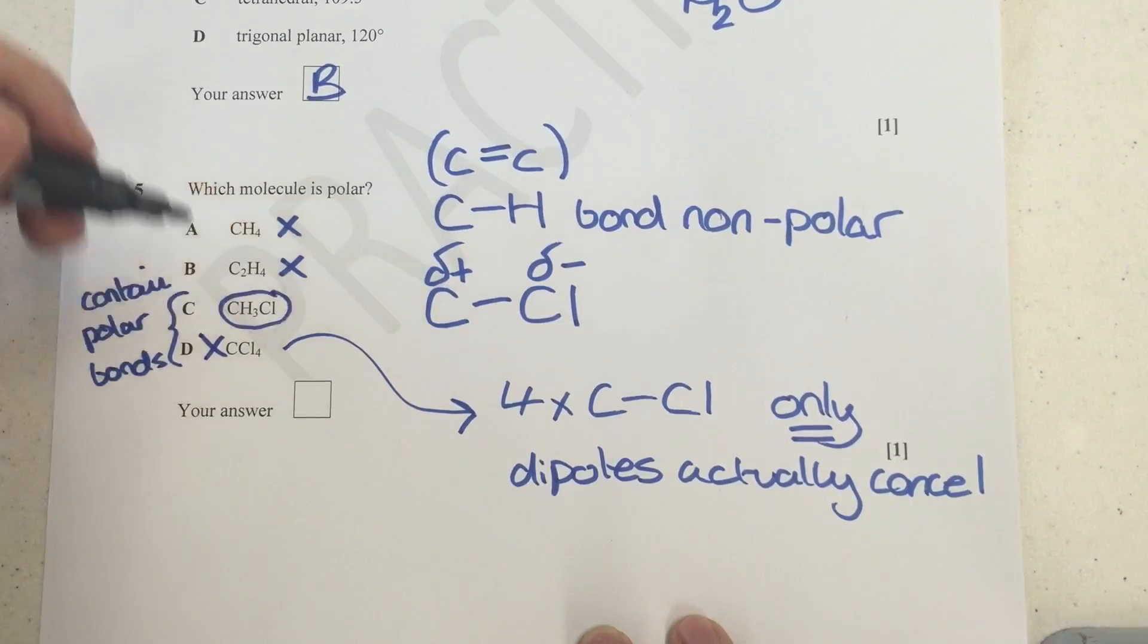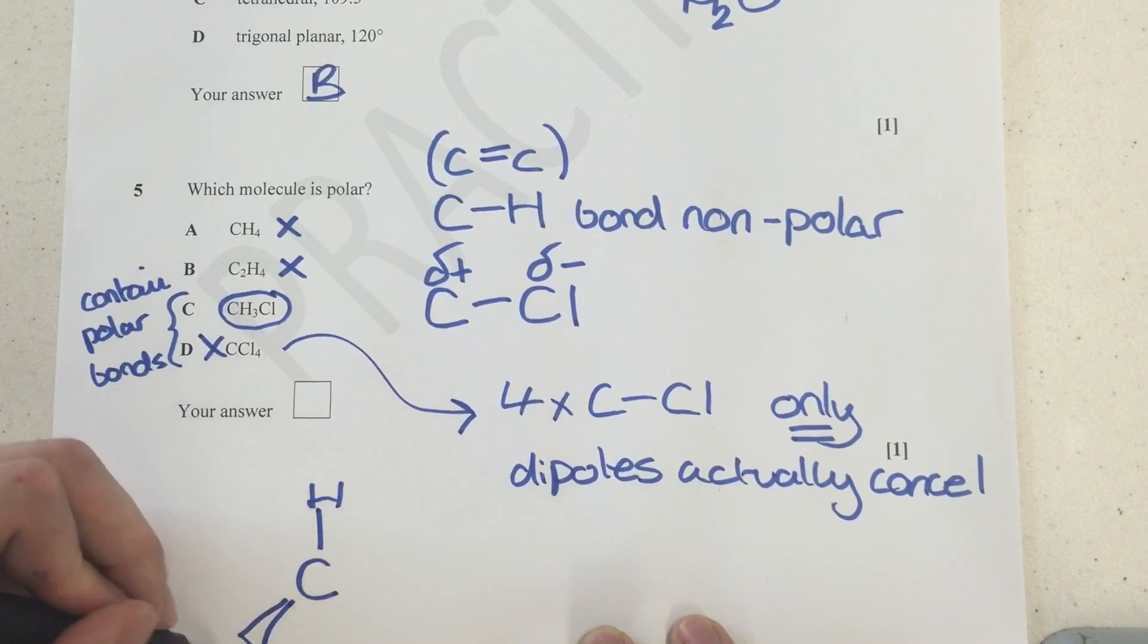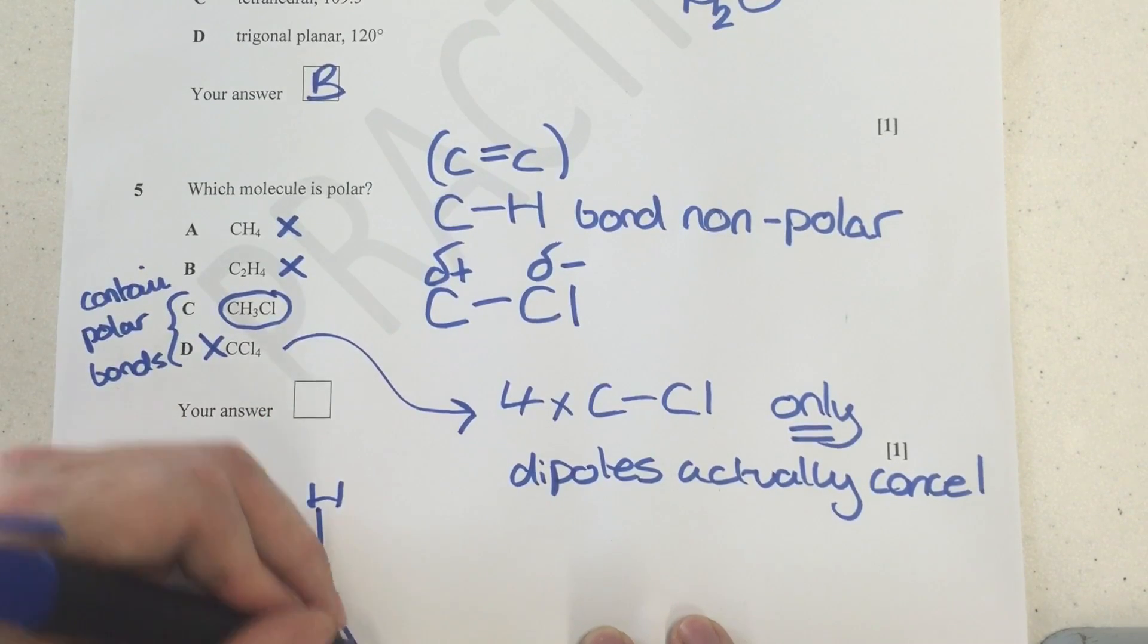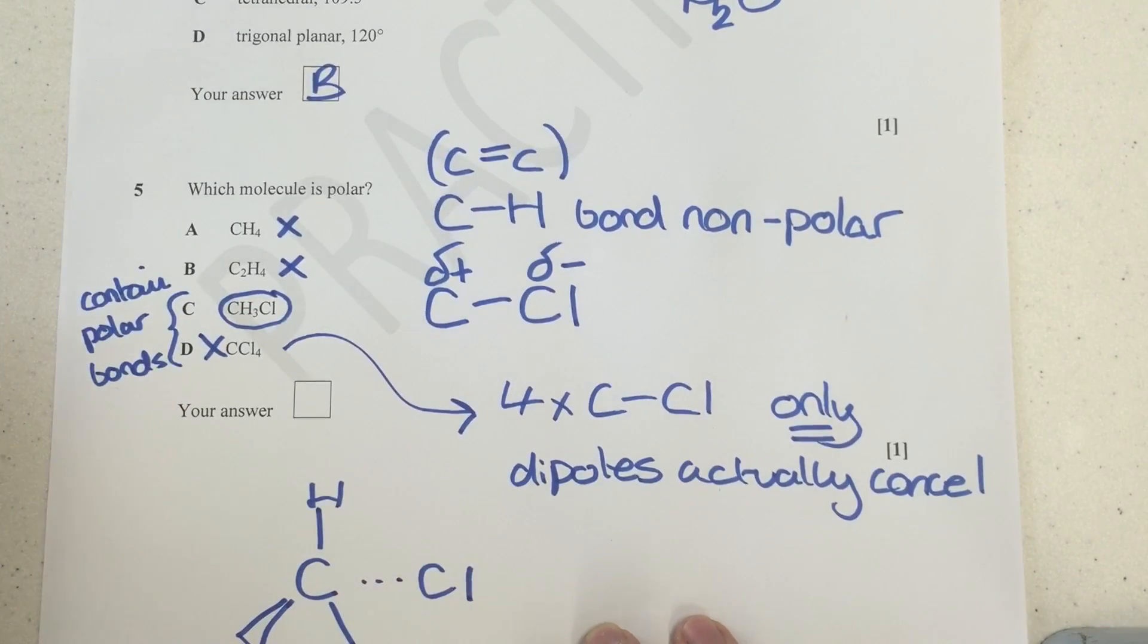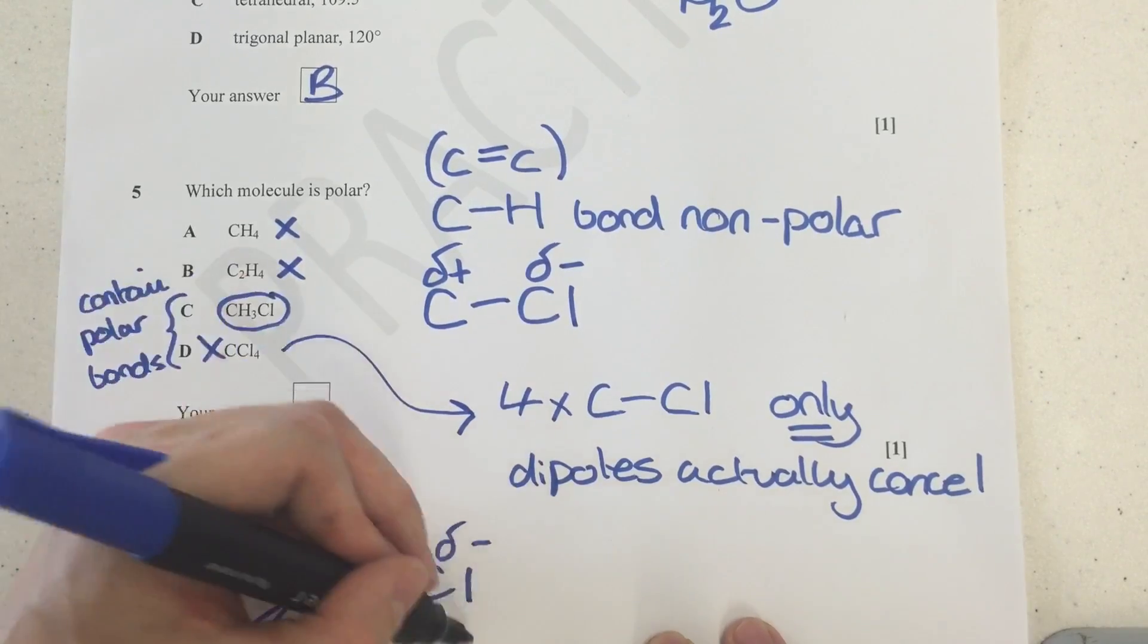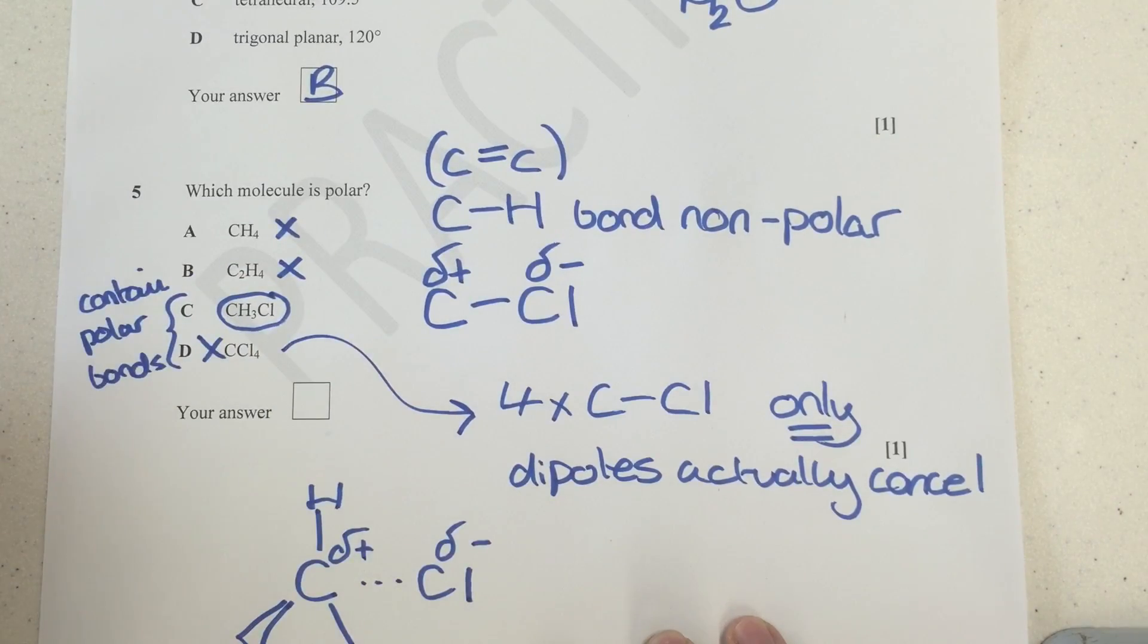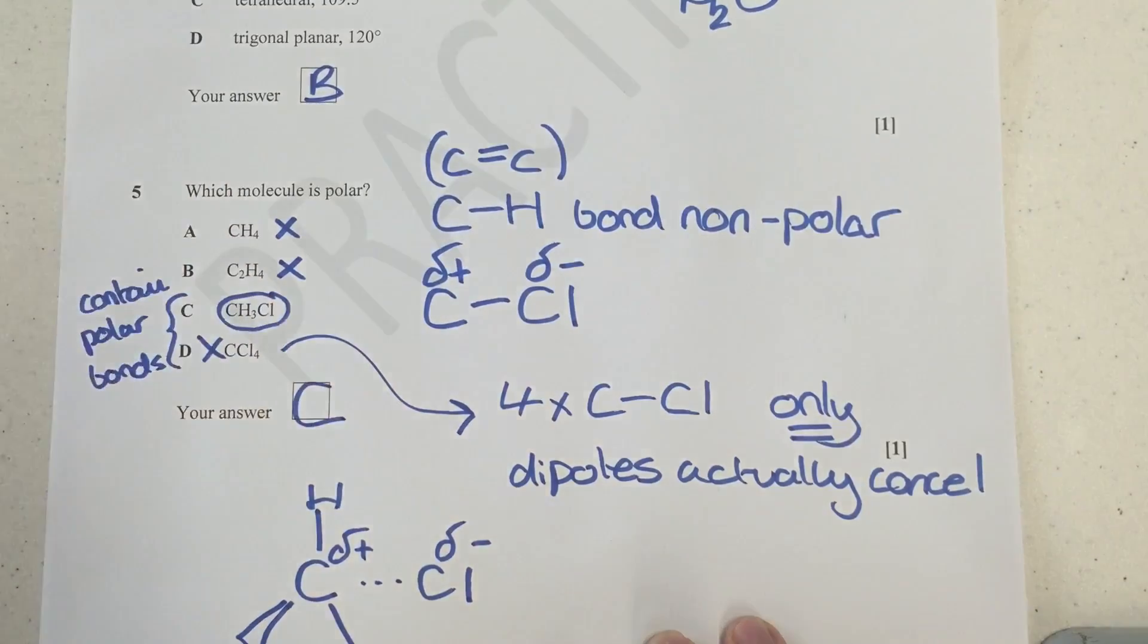And so what that means is, this molecule, despite containing four polar bonds, actually ends up being non-polar. So it can't be this one either. However, here, if we were to look at what CH3Cl looks like, we can see we would have an uneven distribution of electron density across this bond. So we'd see that that's a polar bond. We could have made any one of these, it doesn't really matter. And so we can see that absolutely C is our answer here, because this is the only polar molecule from our selection.